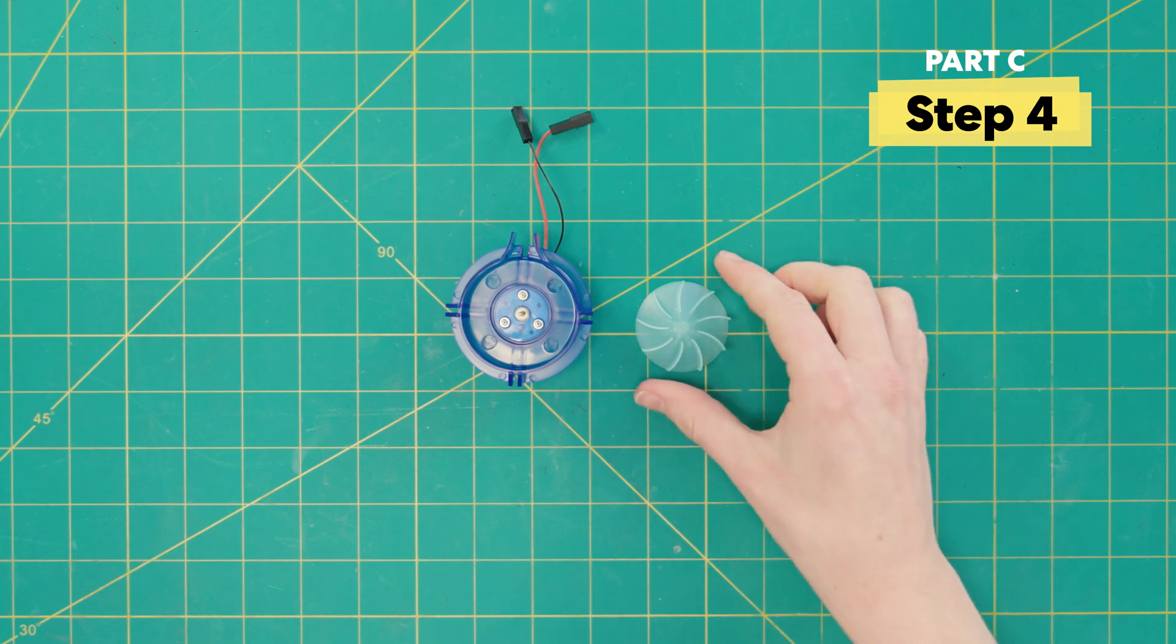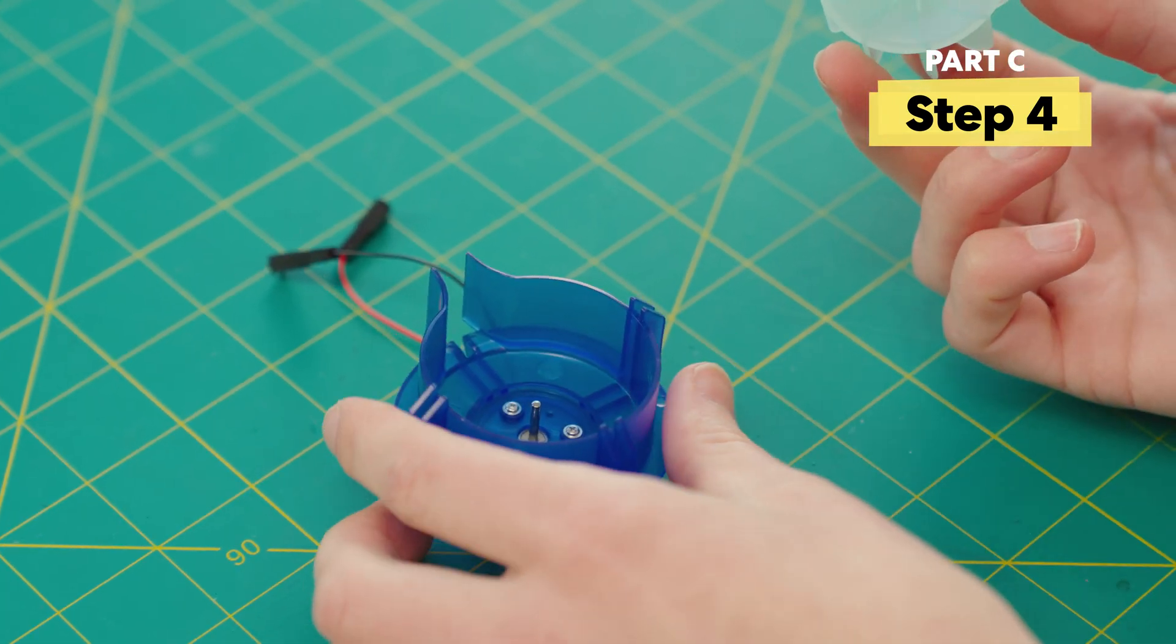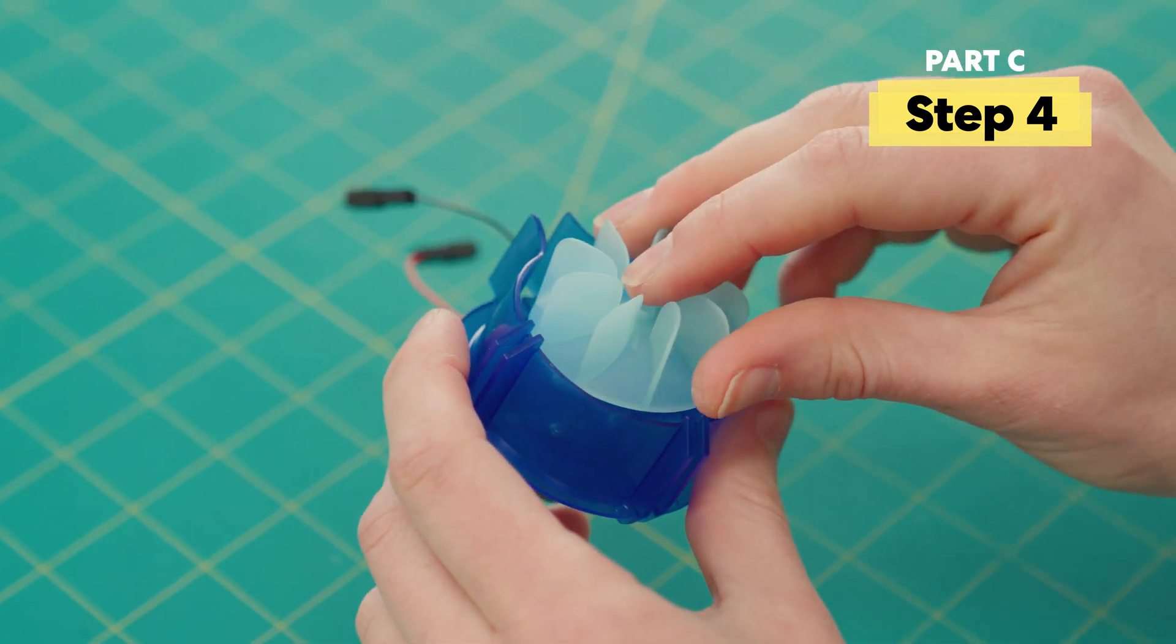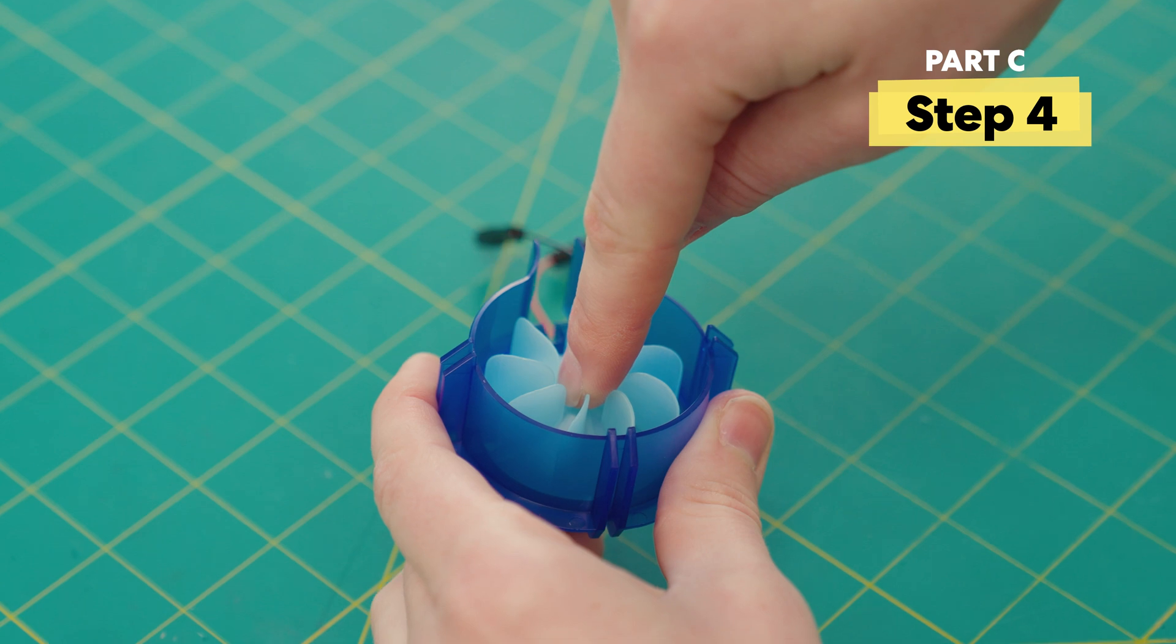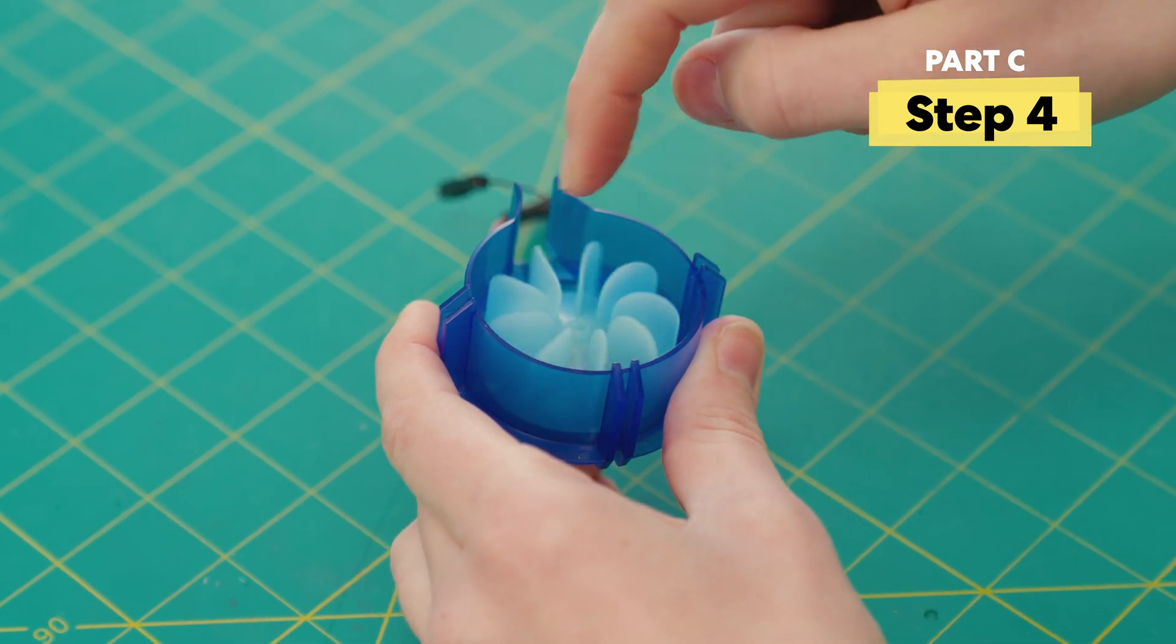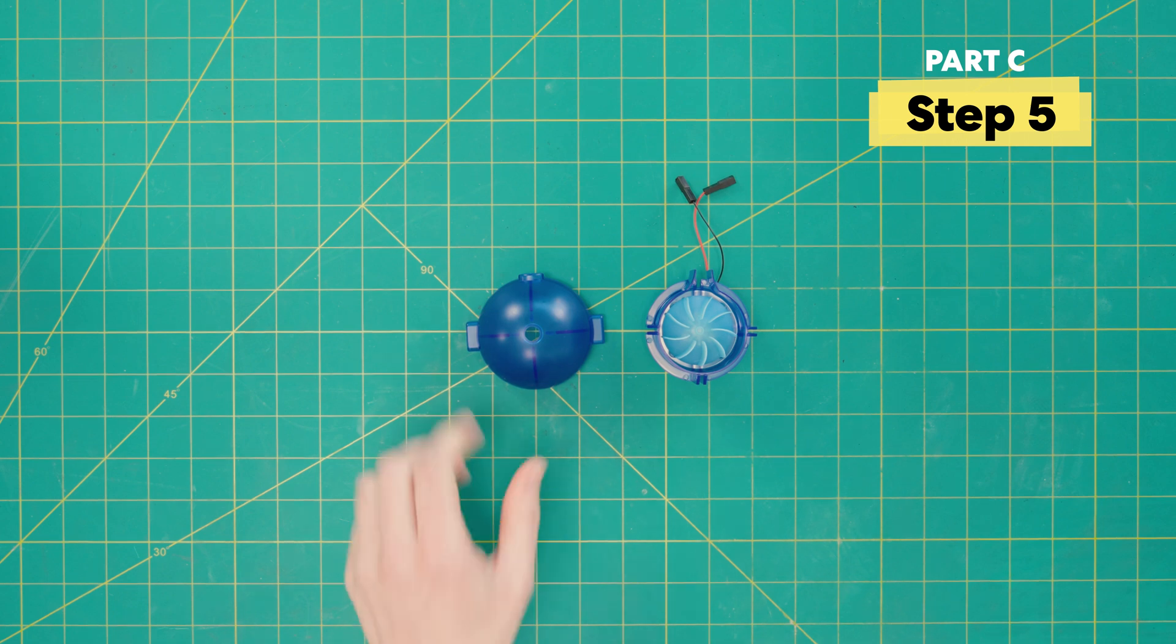All right, now to assemble the fan. Find the little hole on the bottom of the fan. That's what we're going to put onto the motor shaft. When you press it on, make sure to press from the center of the fan. Don't press on the fan blades. Give it a little spin. It should spin nice and easy.